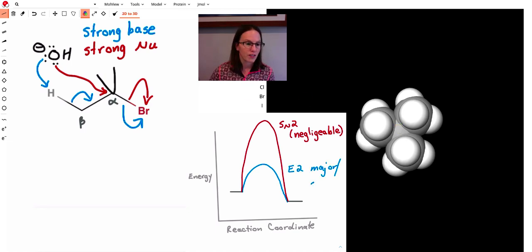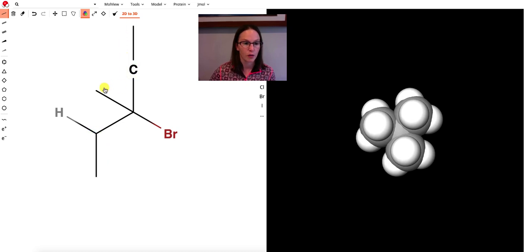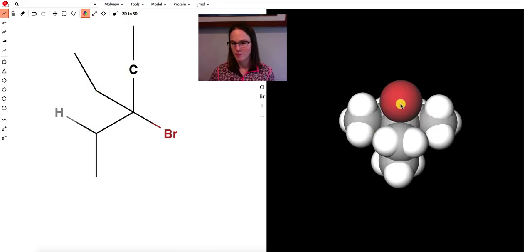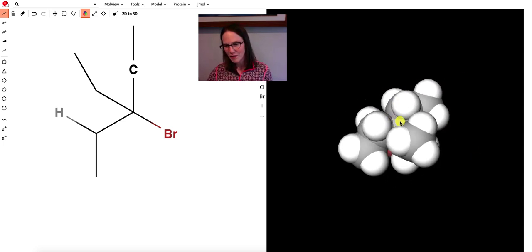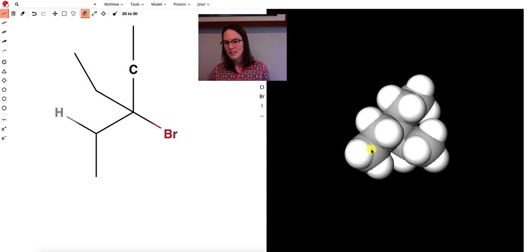And then, of course, that gets even worse as we start to add other groups on. So now as we add even more and more groups, there's the alpha carbon in there. And keep in mind that these groups aren't even static. They're rotating around in space, so they're swinging past that alpha carbon as well.